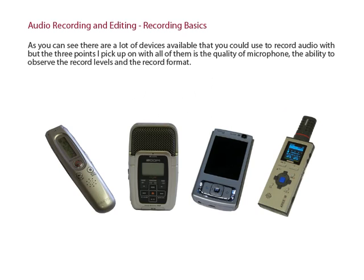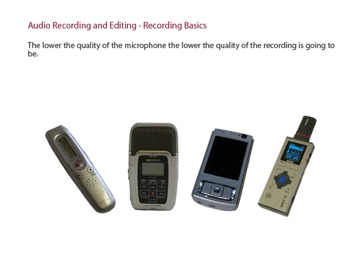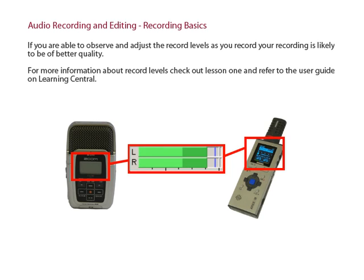As you can see, there are a lot of devices available that you could use to record audio with, but the three points I pick up on with all of them are: the quality of the microphone, the ability to observe record levels, and the record format. The lower the quality of the microphone, the lower the quality the recording is going to be. If you are able to observe and adjust the record levels as you record, your recording is likely to be of a better quality. For more information about record levels, check out Lesson 1 and refer to the device's user guide on Learning Central.